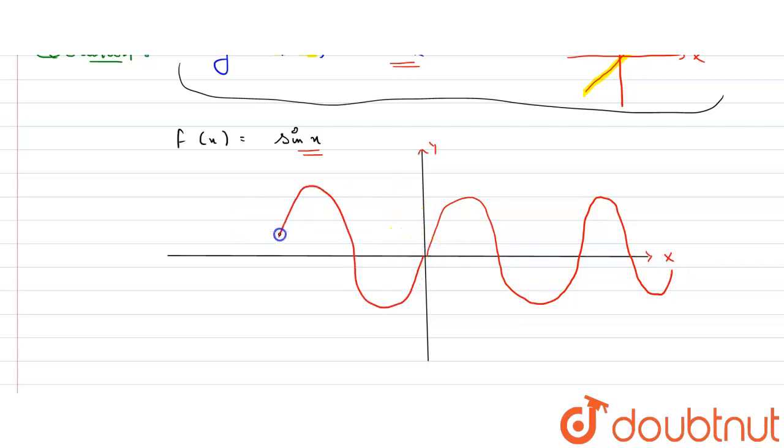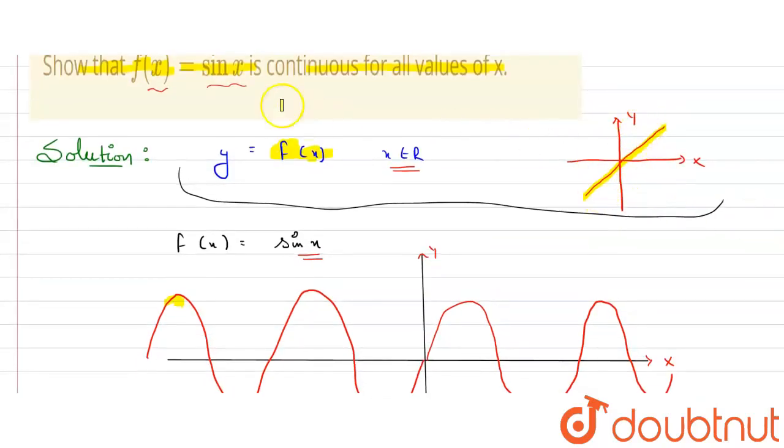It will go up to this and similarly on negative side it will go like this till minus infinity. This is just a freehand graph. We know that this is a graph for sine x. You can see here the line of graph is not breaking anywhere.